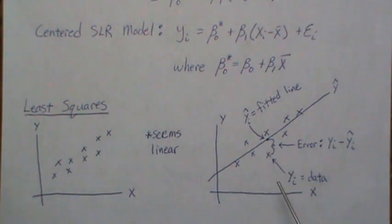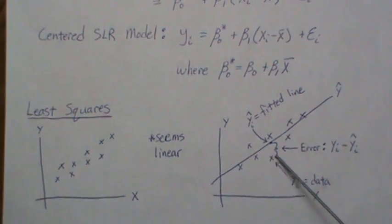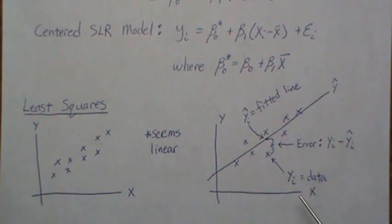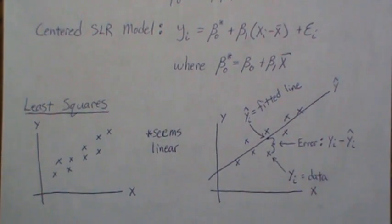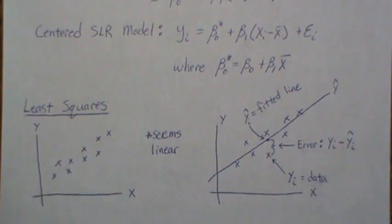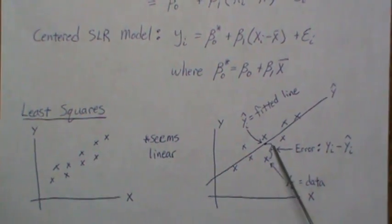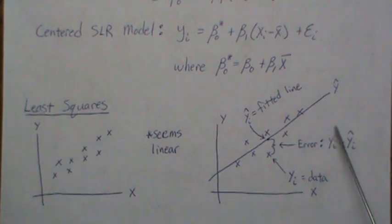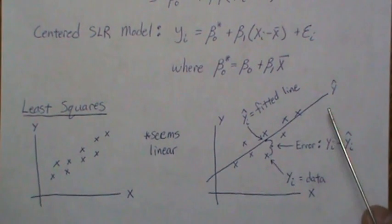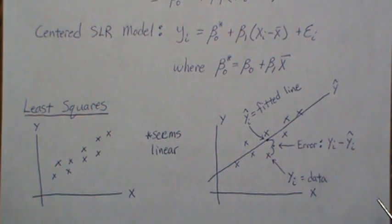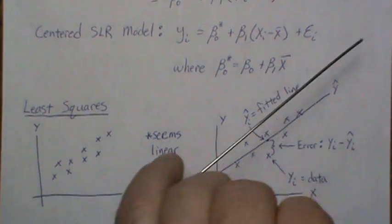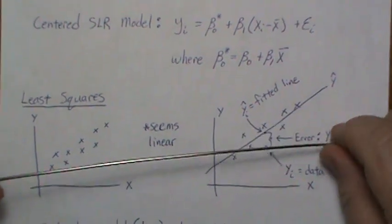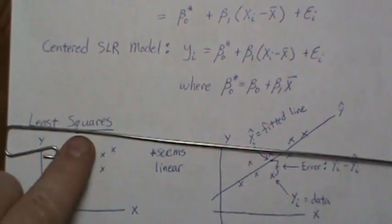We want those residuals to be as small as possible. One criterion is to sum all the errors and minimize that sum. A better criterion is to square each distance and minimize the total squared error — and that is what we do: we minimize the sum of squared errors.